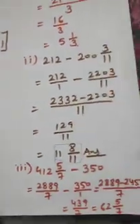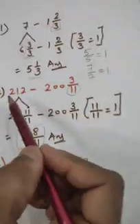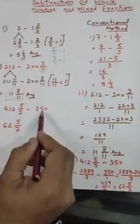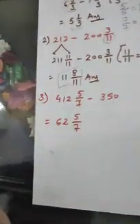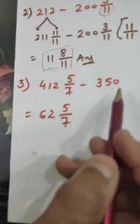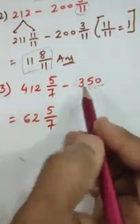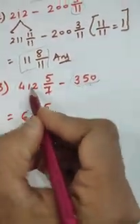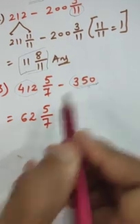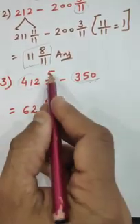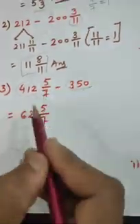Now, you will ask, here whole number is in the beginning and the mixed fraction is subtracted. What will happen if we are subtracting the whole number from the fraction? That is more easier. We don't need to convert it into even a mixed fraction. Simply subtract the whole number from the whole. 412 minus 350, that is 62. And you have got your 5 upon 7 as it is. This is your answer.